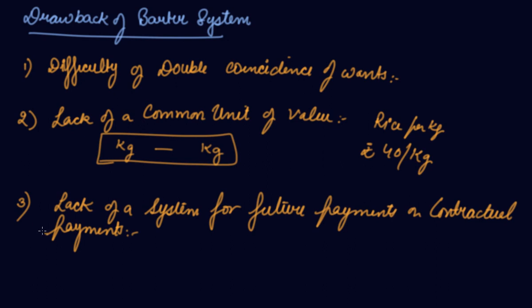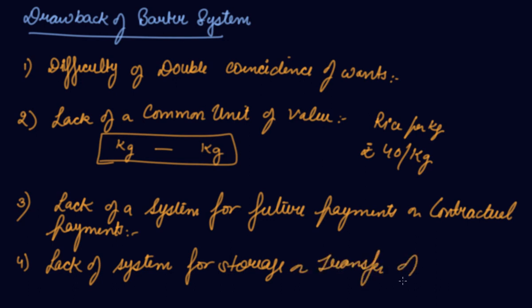Fourth is the lack of system for storage and transfer of value. See, it is very difficult to store the particular goods with you for a longer period of time so that you can coincide your wants with the person you need and exchange the goods. So your goods become perishable.